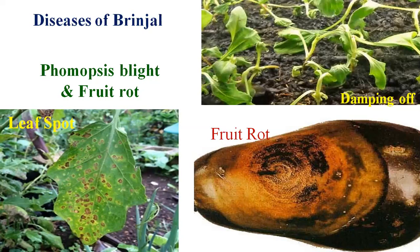The three types of symptoms are: damping off, leaf spot, and fruit rot. Damping off, as we have also seen in tomato, shows a similar appearance. After transplanting the seedling, a certain kind of belting condition occurs at the seedling stage, just after 7 to 15 days of transplanting. This is known as systemic infection by Phomopsis to the seedlings of brinjal, resulting in damping off — the death or belting of the plant at the nursery stage or after transplanting in the main field.